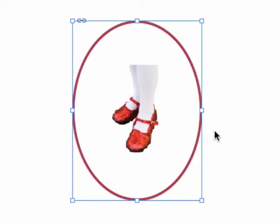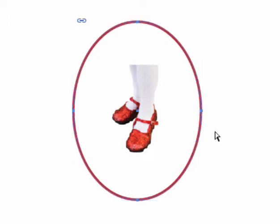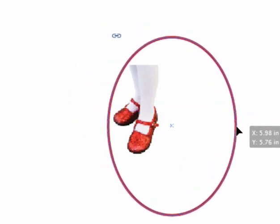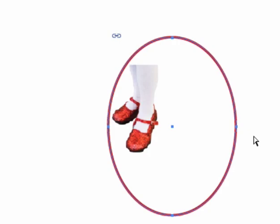Then switch to the direct selection tool. Rather than going over to the tools panel, I just hit the letter A. Now I have the direct selection tool, the white arrow. But I also have the frame selected with all its points. Press on any point, and I can drag the frame without moving the image.